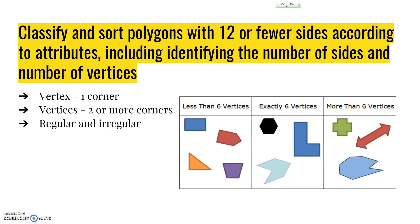They'll use sides and vertices to identify and classify these shapes. A vertex is one single corner. When referring to more than one corner on a 2D shape or 3D solid, we use the word vertices, which is the plural form. They'll need to look at shapes that are regular and irregular.